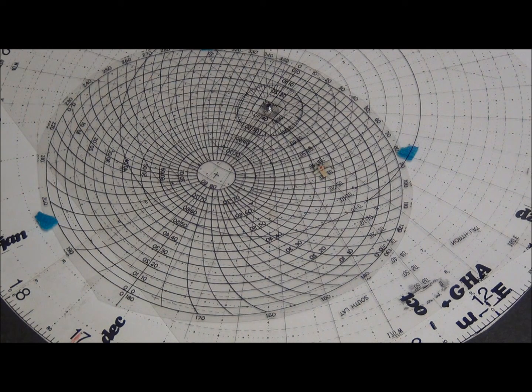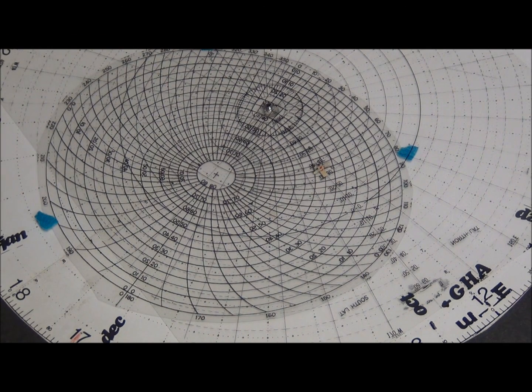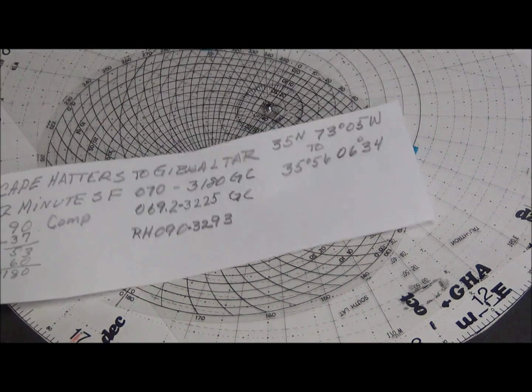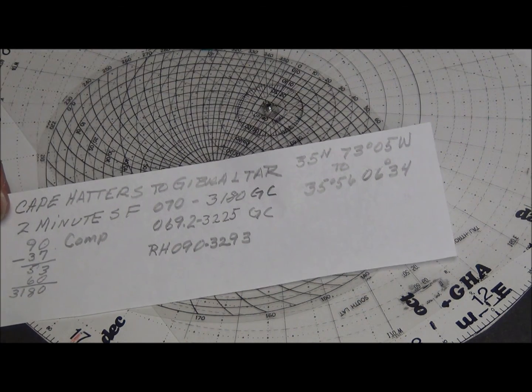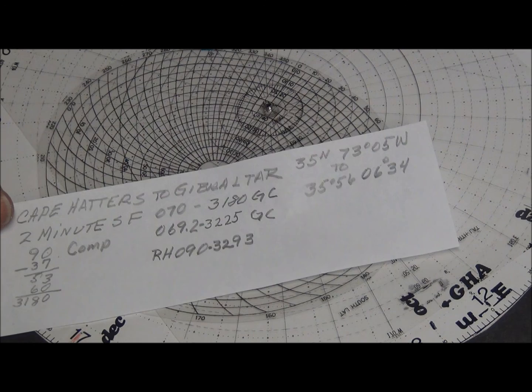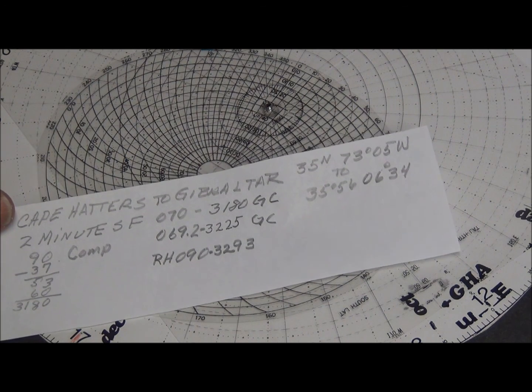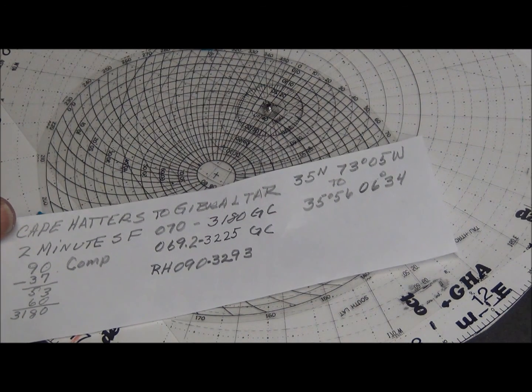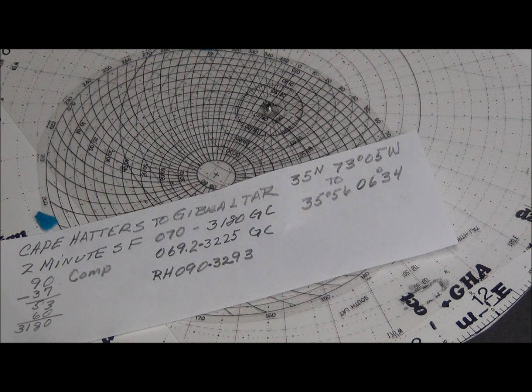Now the Rhumb Line was 090, and my reading from the 2-Minute Starfinder was 070. So this means there's a 20 degree towards the pole starting point.